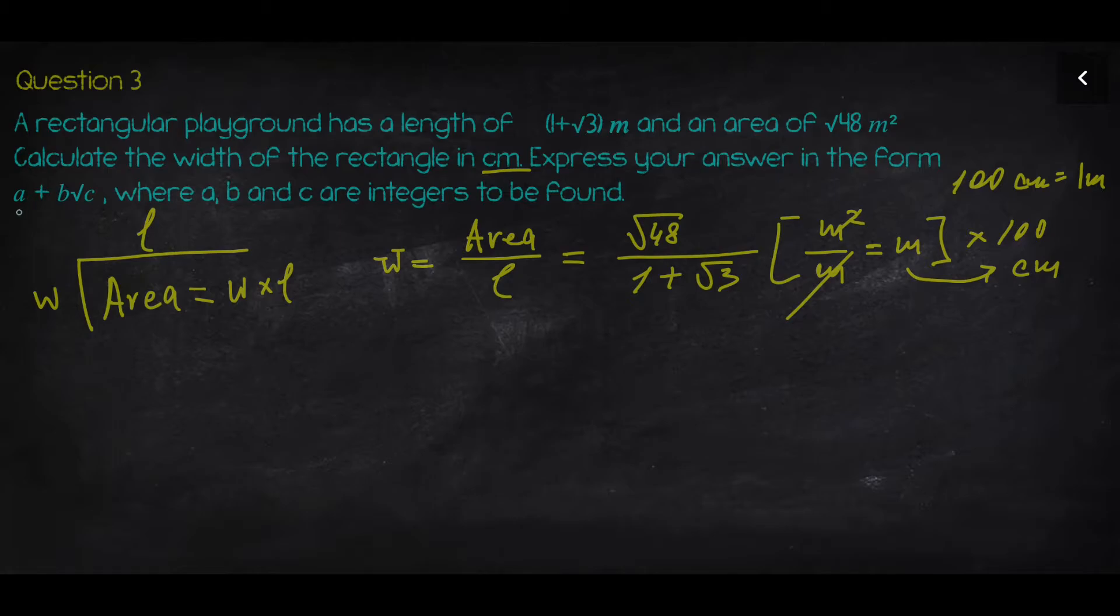Because we need to present your answer so that there will be no surds, no radicals in the denominator, in the bottom part, but right now we do have this, we need to eliminate surds from the denominator. This procedure is called rationalizing the denominator. What we're going to do is multiply by the same structure (1 and √3) except we'll take the opposite sign to what you had before. It's called a conjugated expression.